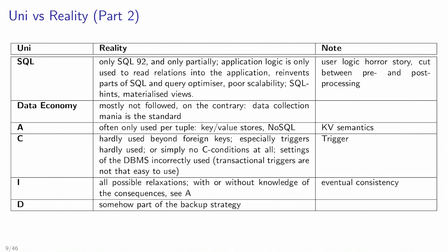When it comes to SQL, in reality you often see only SQL 92 being used, and only partially. Some companies use databases as a file system with CRUD-style access — create, read, update, delete — doing tuple-wise access and fetching individual tuples into the application server, then doing query processing like grouping or joining there. This could be delegated to the database system, and not doing so reinvents parts of SQL and the query optimizer. By definition it makes the application unscalable.